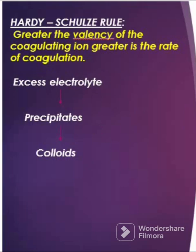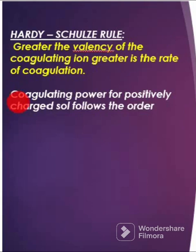This shows that coagulation depends upon the coagulating ion. The Hardy-Schultz rule states that greater the valency of the coagulating ion, greater is the rate of coagulation. Meaning, if the coagulating ion has greater valency, then greater will be the precipitation.